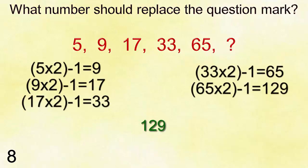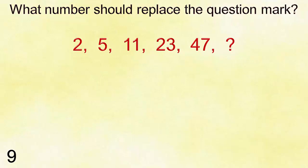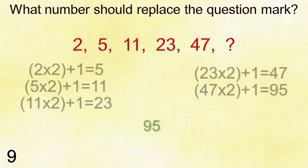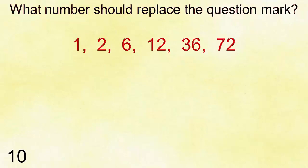One hundred twenty-nine. Number nine: two, five, eleven, twenty-three, forty-seven. Answer is ninety-five. Number ten: one, two, six, twelve, thirty-six, seventy-two.